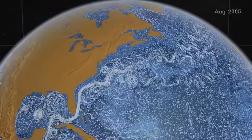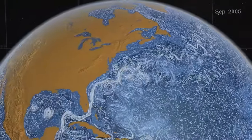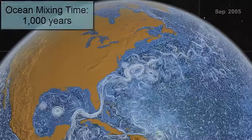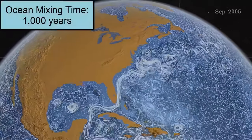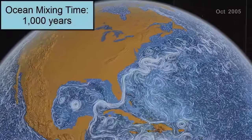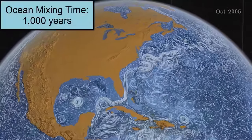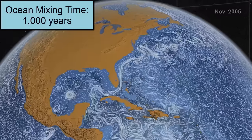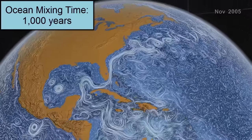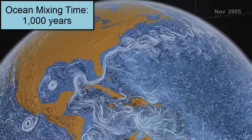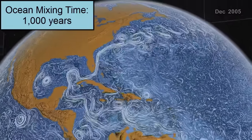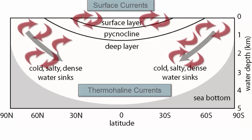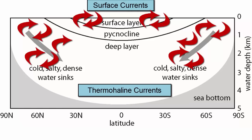Let's return to the concept of mixing, which happens for ocean waters over 1,000 years. How does this mixing happen? Through a combination of surface currents and thermohaline currents. But how do we mix between the two? In the poles, there's no pycnocline, so surface and deep water can mix easily.